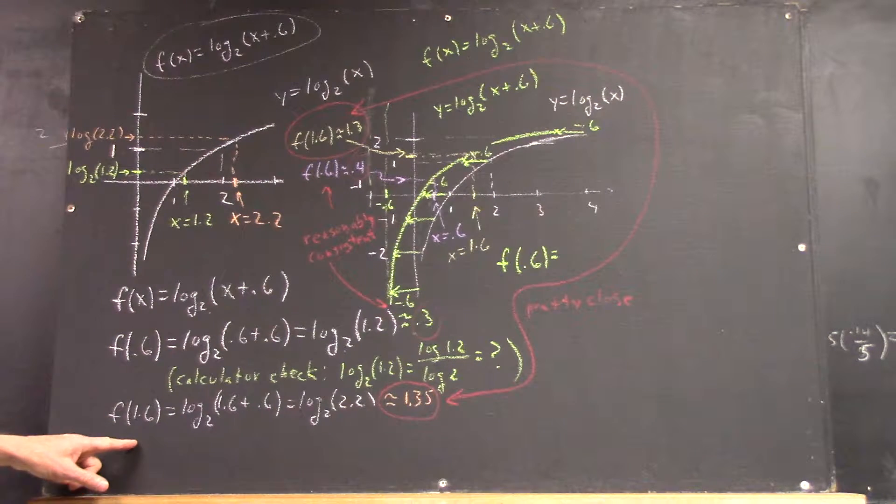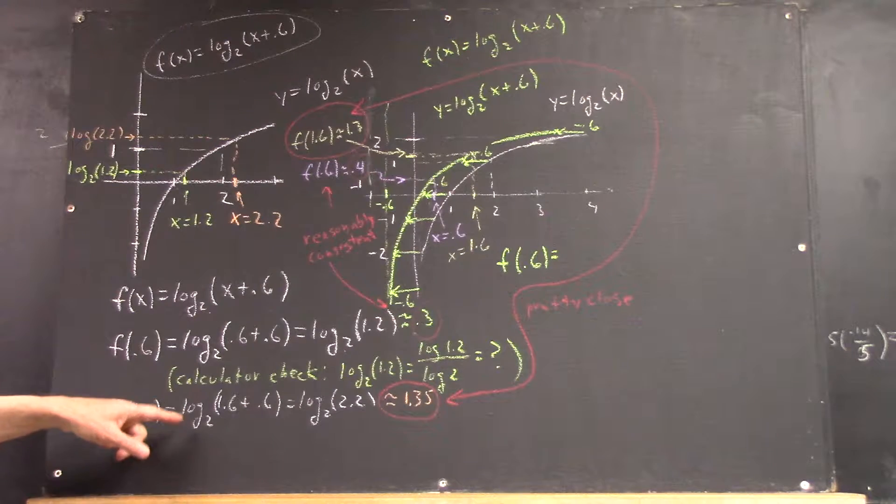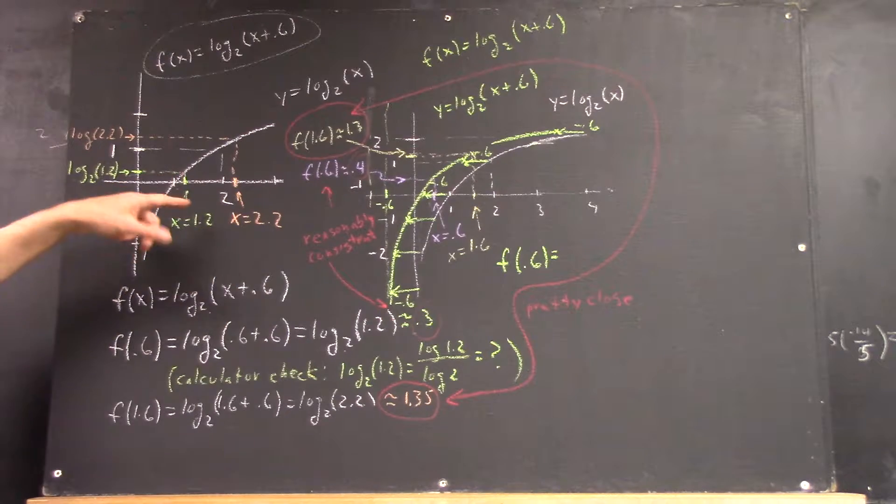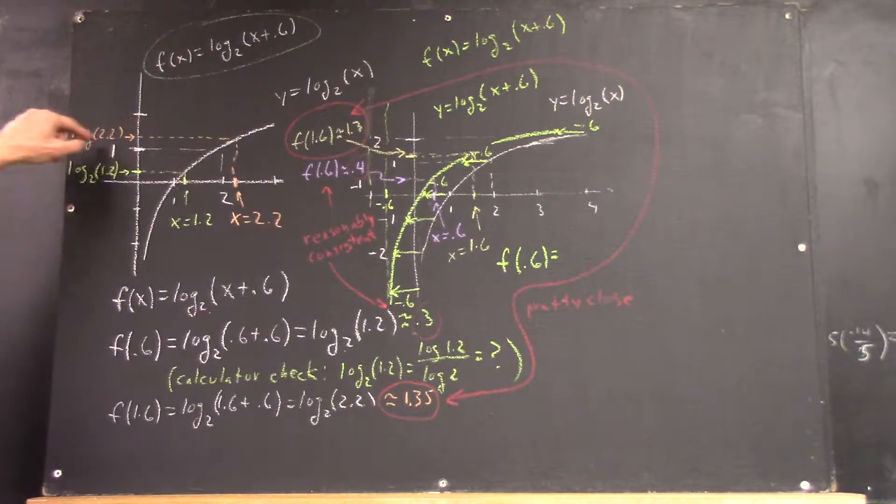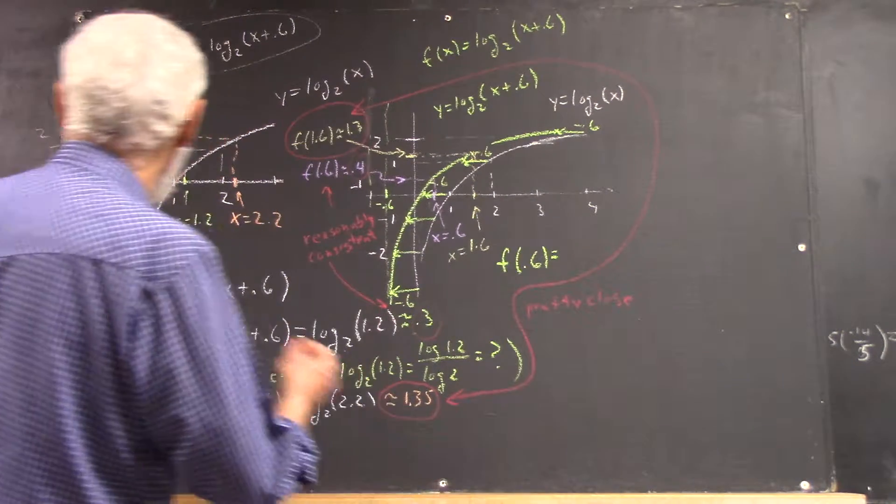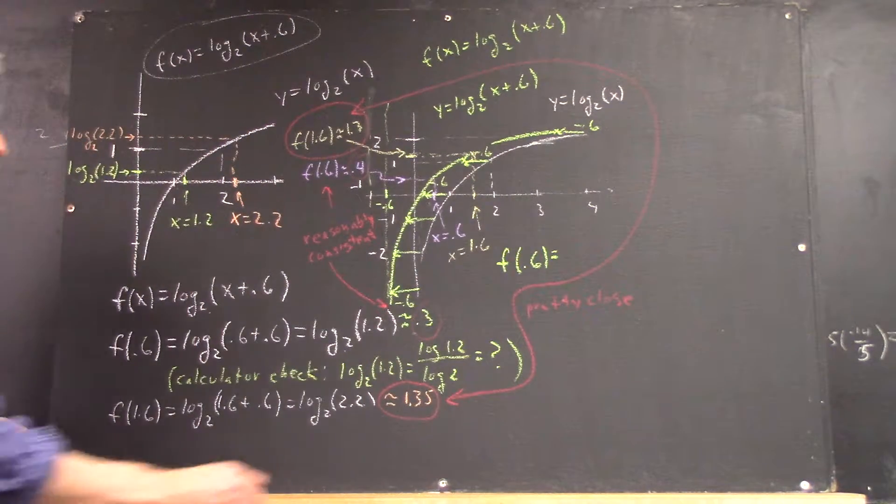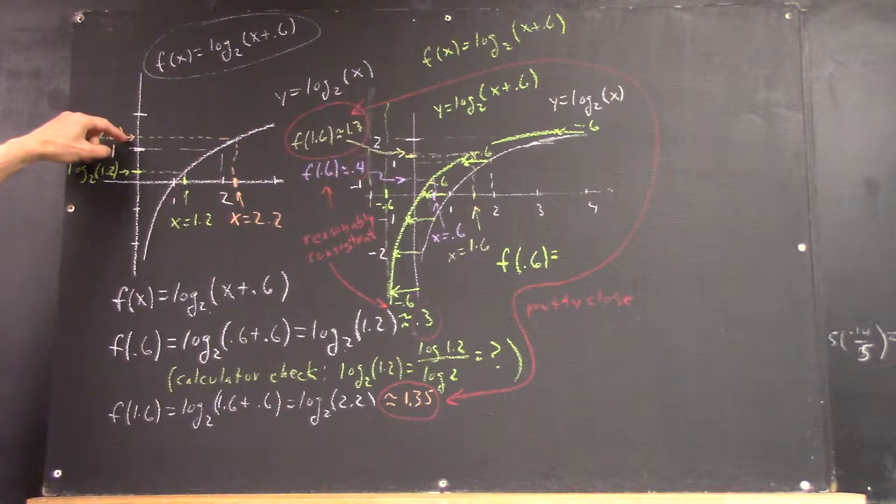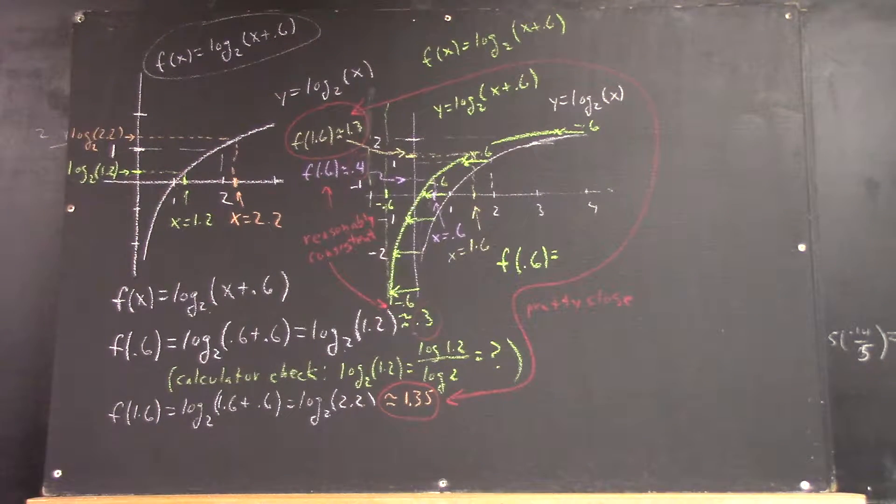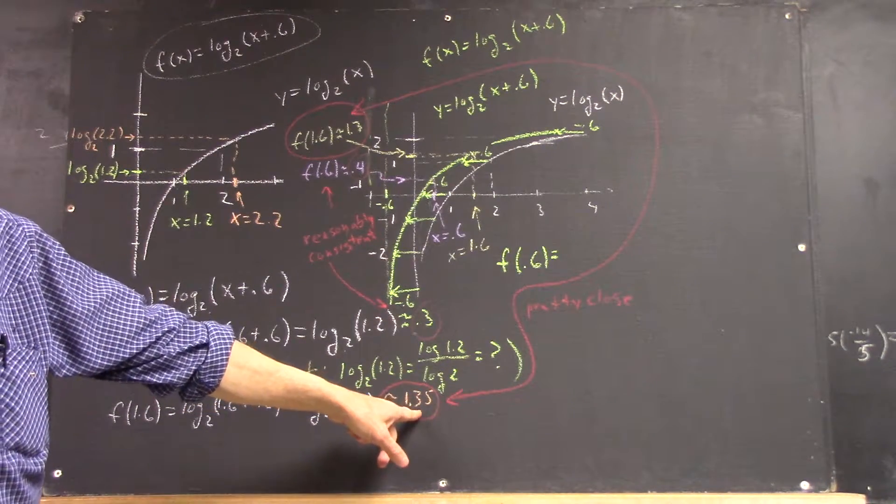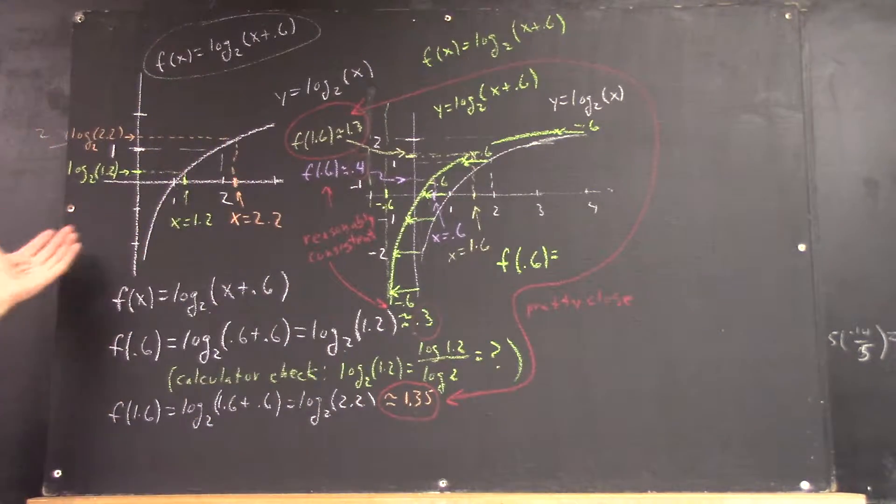So, and then f of 1.6, well, that means log base 2 of 1.6 plus 0.6, which is log base 2 of 2.2. I go to this graph. Here's x equals 2.2. Here's log base 2 of 2.2. I didn't put the base 2 on there. I was already writing down a bunch of 2s and left that one off. And then that estimate, we came out. I thought it was between, it's too high for 1.3, maybe too low for 1.4, so I just went with 1.35. So, that's one way of using the graph.